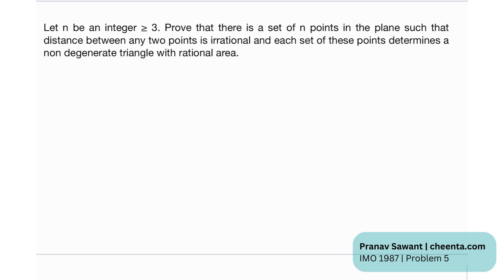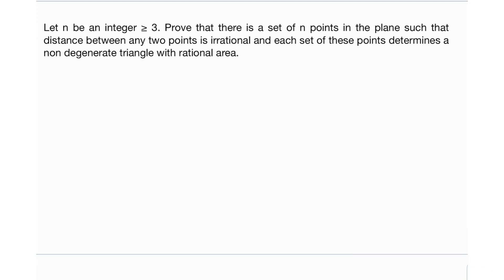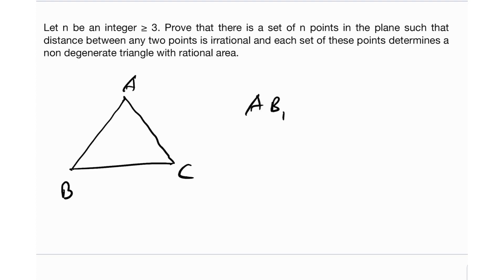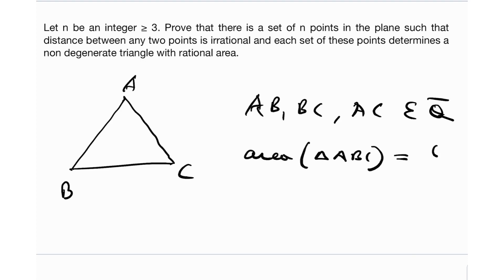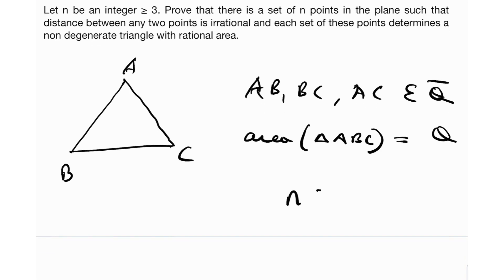This might seem very wordy, but really what they are trying to say is: you have a non-degenerate triangle ABC such that the side lengths AB, BC, and AC are irrational — represented as Q-bar — but the area of triangle ABC is a rational quantity. We need to prove that this exists for any N points in the Euclidean plane, where N is greater than or equal to 3, because you cannot form a triangle with only one or two points.